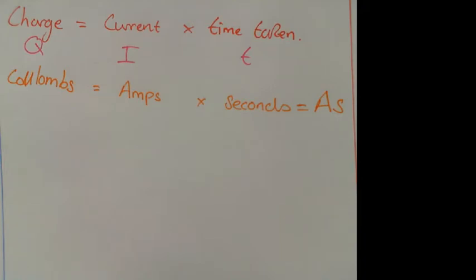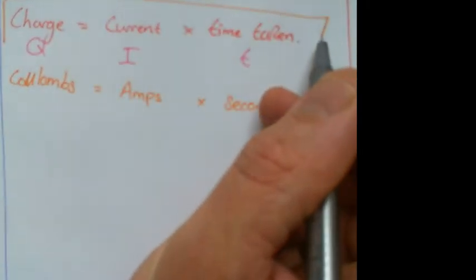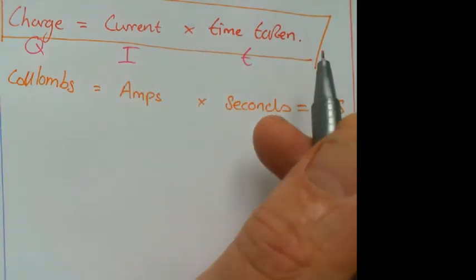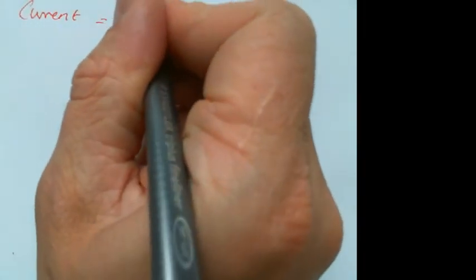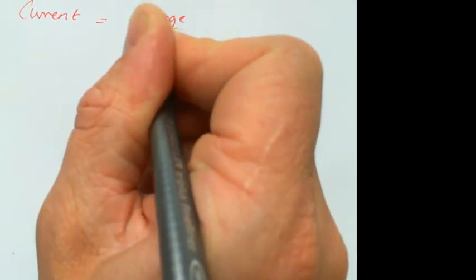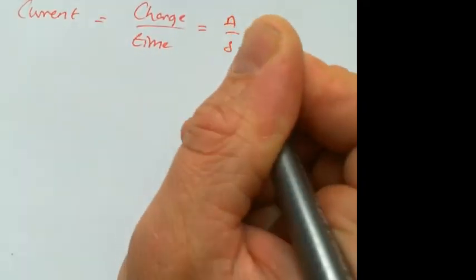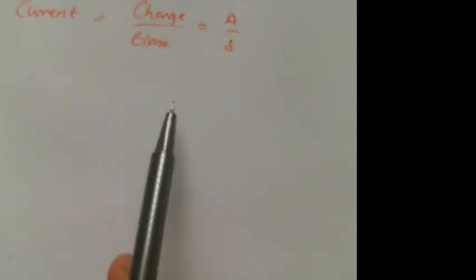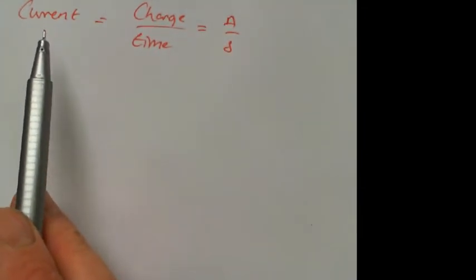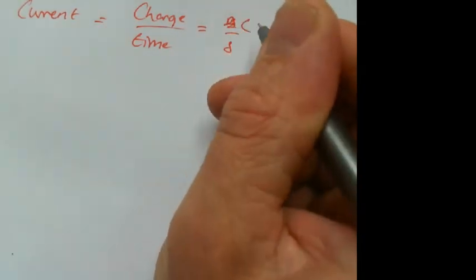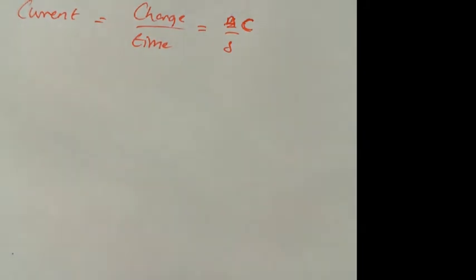That's one of the two main equations you need to remember about electricity, because you need to know the definition of charge. Equally, you can use that definition to work out what current is — current is simply charge per second, which in units would be Coulombs per second.